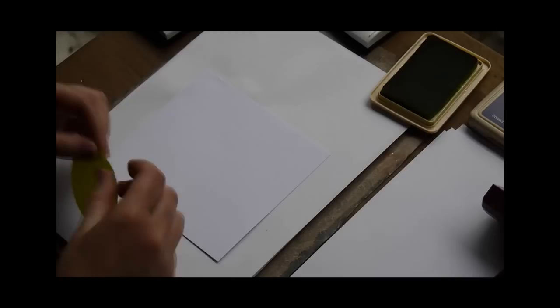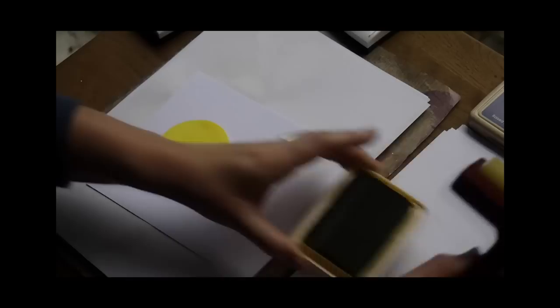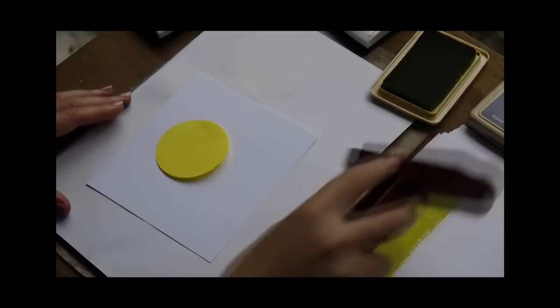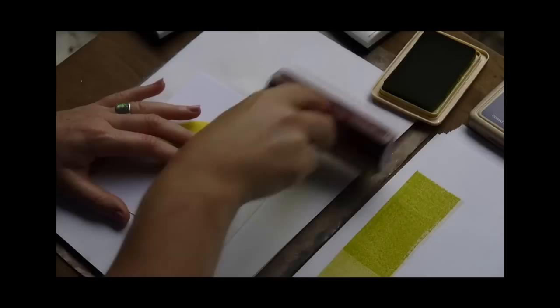Okay, moving on to our second card now. We're going to use the same technique. So, using our circle that we cut out earlier, placing that down. We're going to start with our citrus. Okay, so inking it, remembering to take the excess off and the edge where it all gathers again. We're going to work our way around the edge of the card.